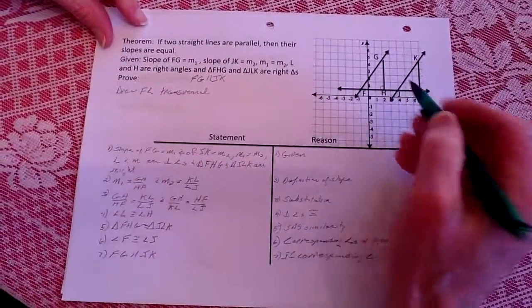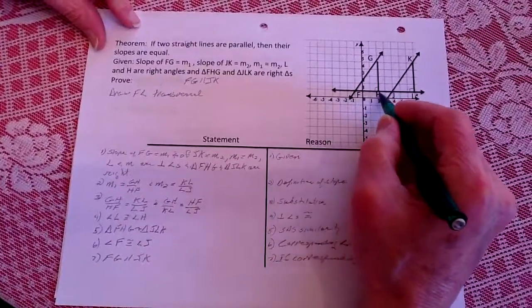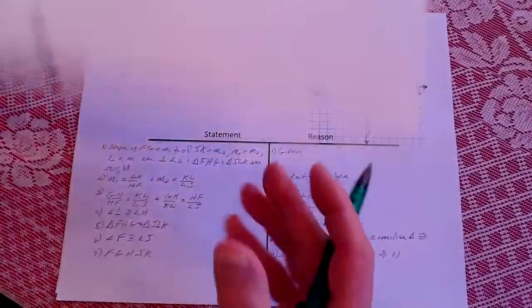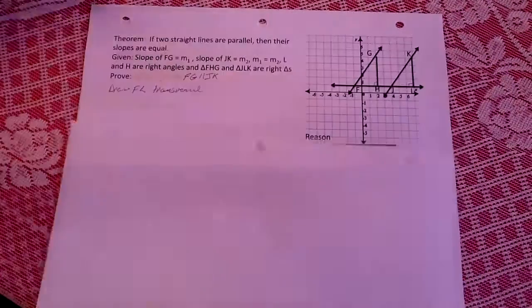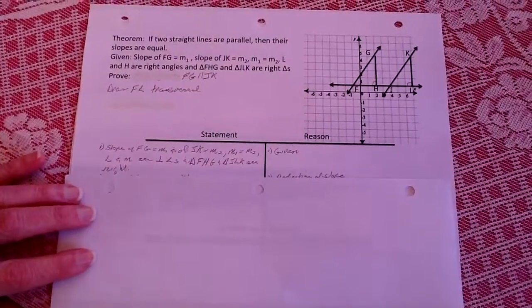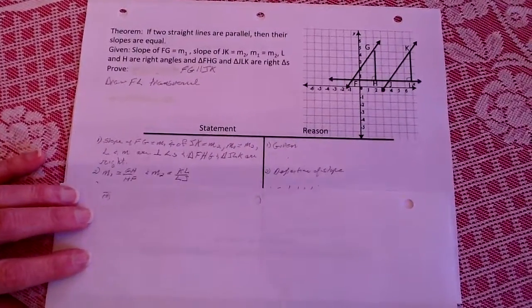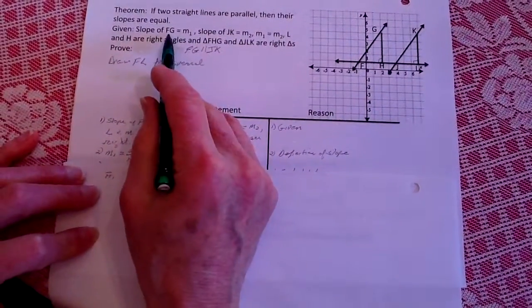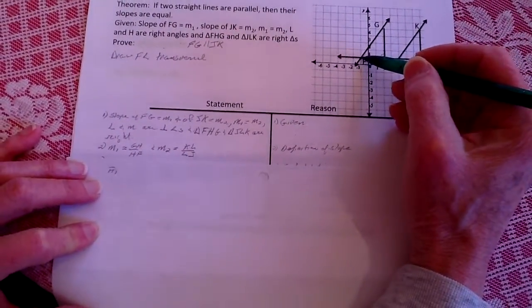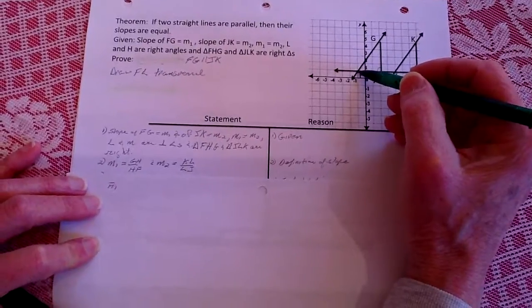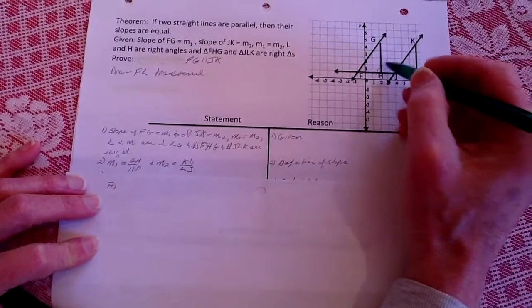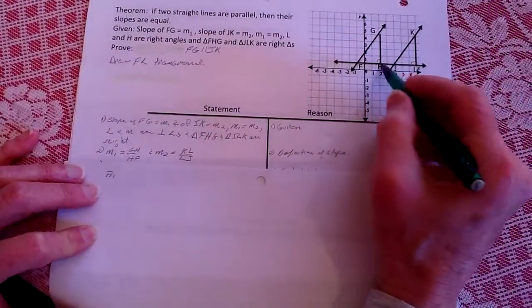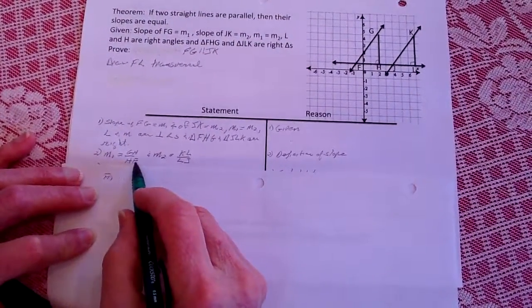And so I'm going to draw a transversal here from F to L all the way across here. So if we go back down here to our given, the restatement of the given, we know that FG was the slope, so the slope of m1 is going to equal the rise GH over the run of HF.